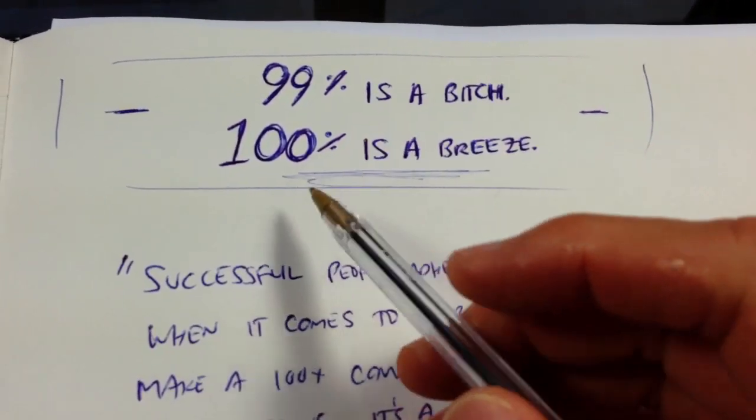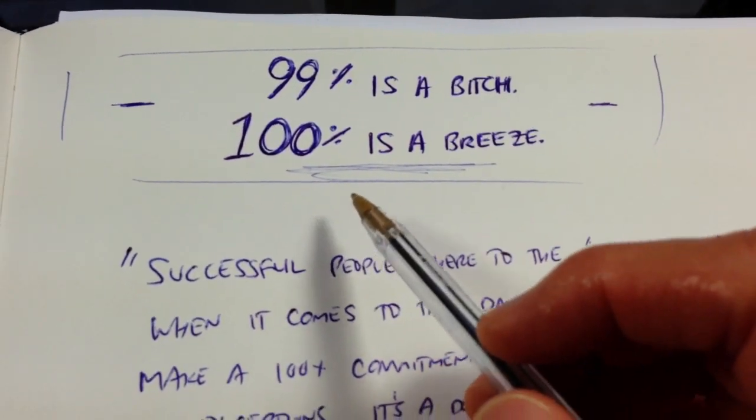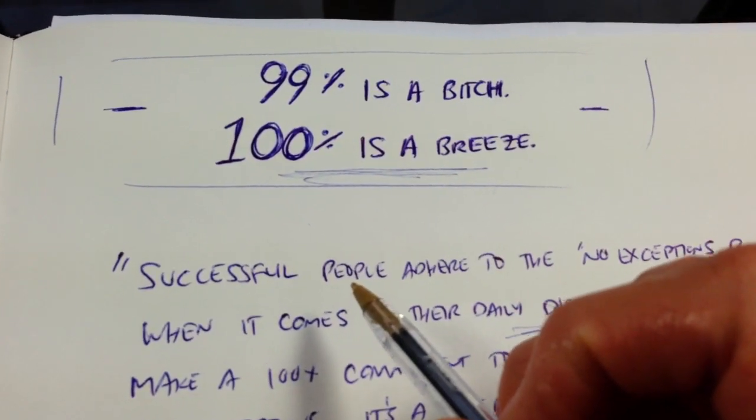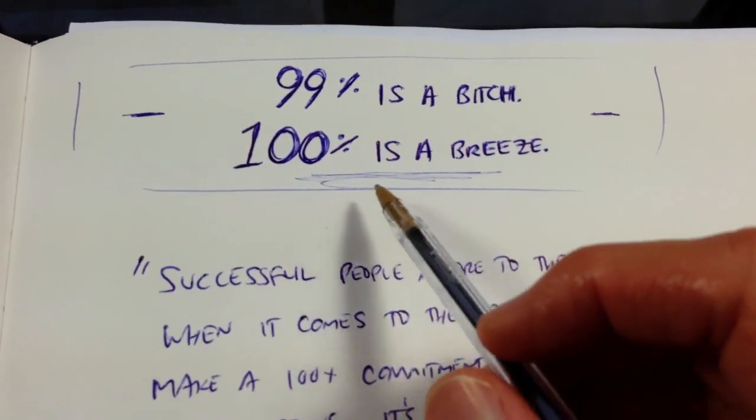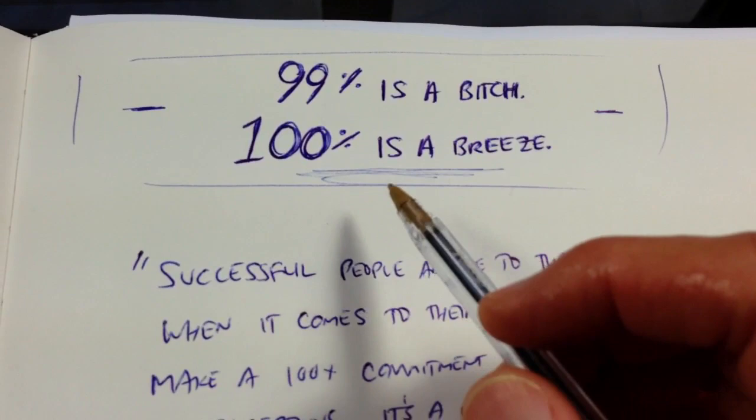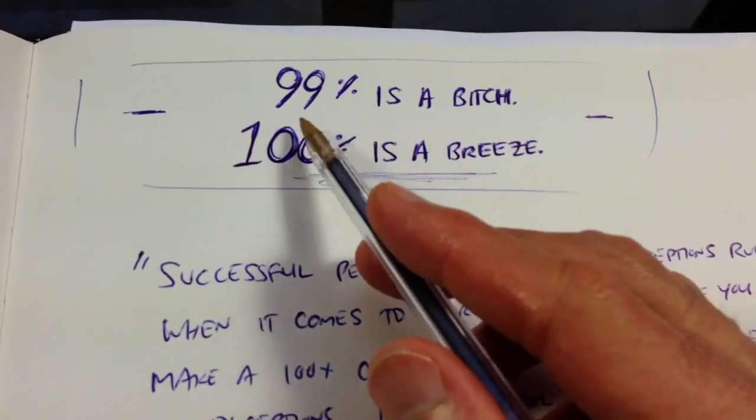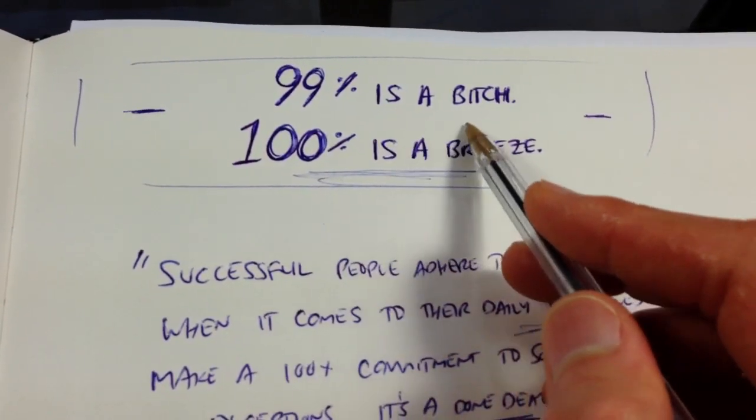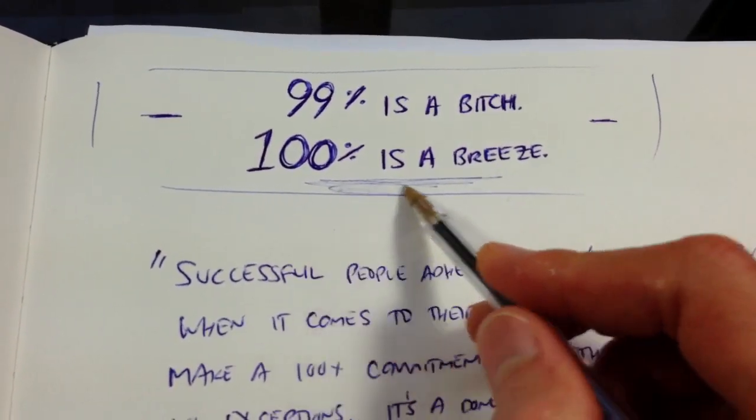Hey guys, what's up? This is Brian with another Optimal Living 101 video. This one's very simple. We're going to make it short. It's also huge. This is one of the most powerful ideas I've ever implemented in my life. 99% is a bitch. 100% is a breeze.